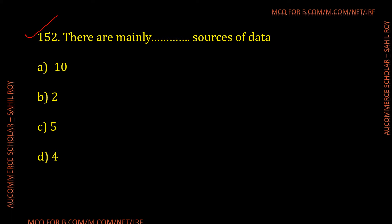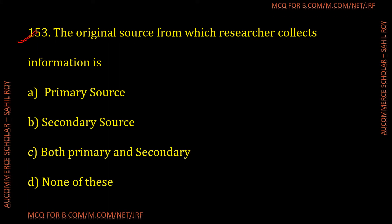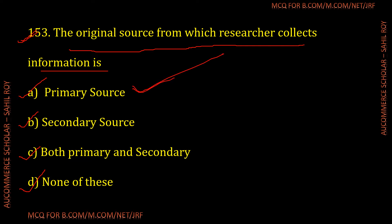Question number 152: There are mainly how many sources of data? And question number 153: The original source from which researchers collect information is called what? The answer is primary source — Option A is the correct answer for the given question.